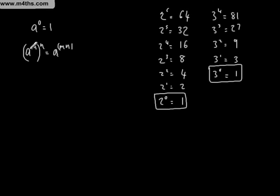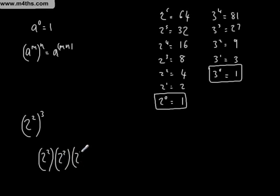Let's focus on this one right here. Let's take an example. If we have 2 squared to the power of 3, this is telling me I've got 2 squared, and I've got 3 lots of those brackets.